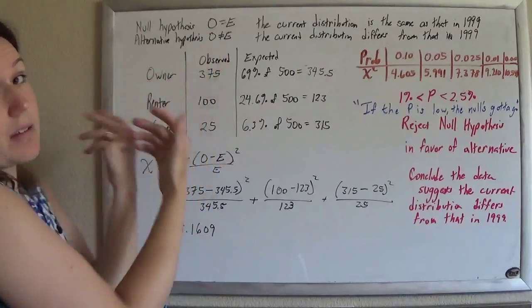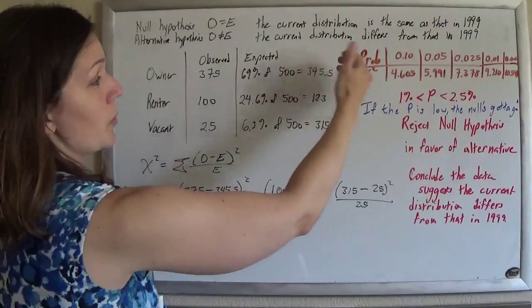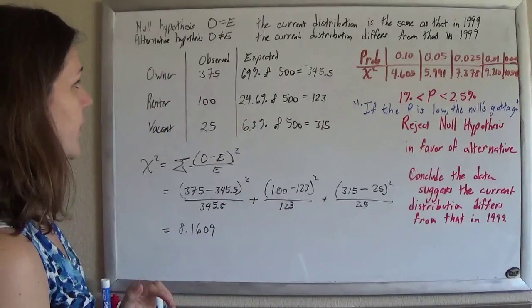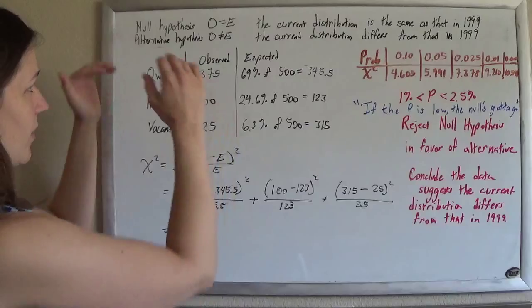And then alternatively, it doesn't equal that, so that the current distribution is different from 1999, and these observed values do not equal those expected values. So, we have that set up.